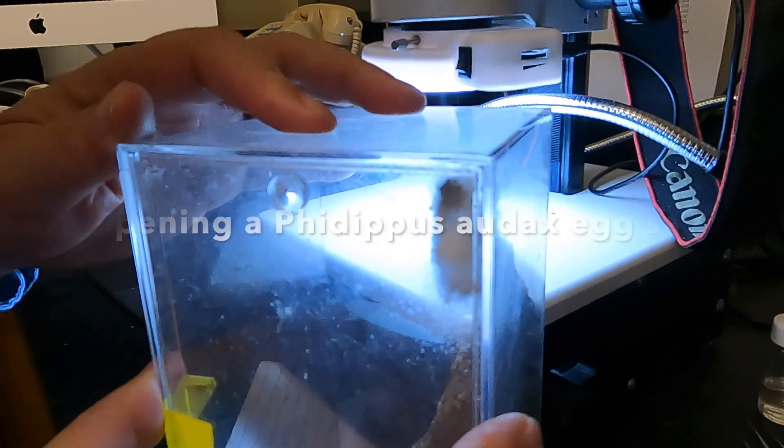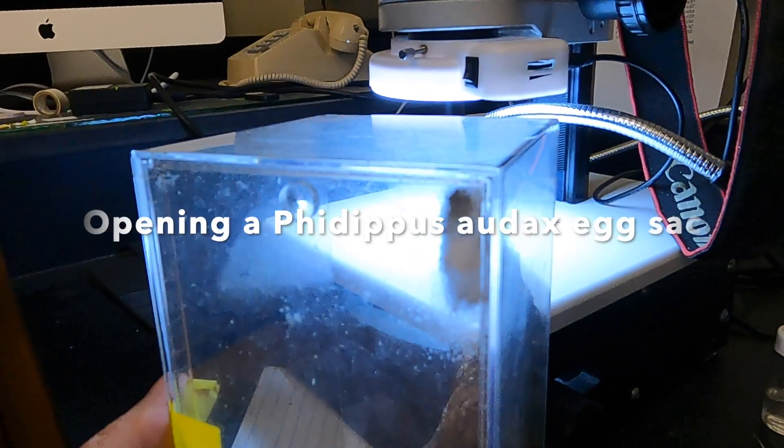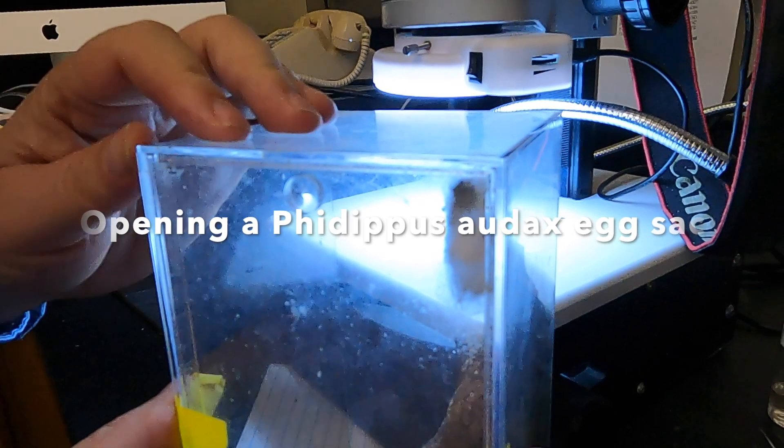Okay, so what we got here, we got Phrydippus Audax, the bold jumping spider.